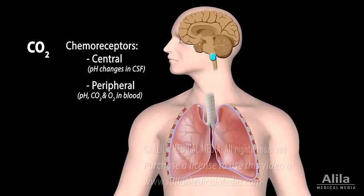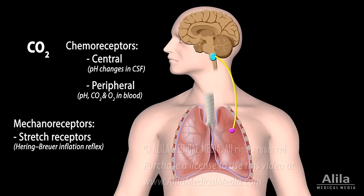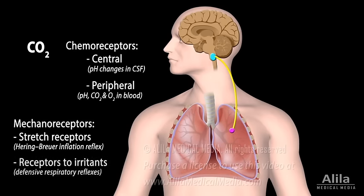The respiratory center also receives input from various mechanoreceptors in the lungs, which transmit information about the mechanical status of the lungs via the vagus nerve. For example, pulmonary stretch receptors present in smooth muscle of the airways are activated when the lungs are excessively inflated and trigger the inflation reflex, which stops inspiration and prolongs expiration. Other receptors respond to inhaled irritants and are responsible for defensive respiratory reflexes, such as bronchoconstriction or coughing.